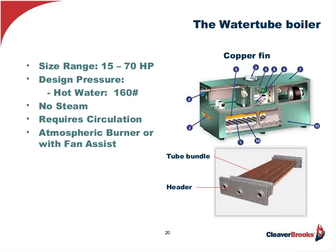The copper fin border evolved primarily for pool heating but is now used extensively for commercial building heat. The size range is small, and these are normally applied as multiple units with a control sequencer used to stage the firing based on system demand. The tube bundle is normally copper, but copper-nickel is also available if water conditions dictate, and the headers can be either cast iron or bronze for the same reason. Copper fin units require forced circulation and normally employ an atmospheric gas-fired or fan-assisted burner. Note that these units cannot be used for steam — only hot water heating.